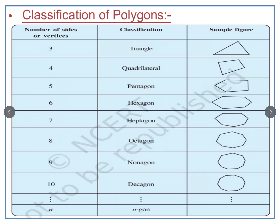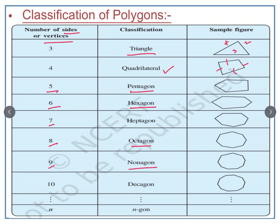We have the classification of polygons based on the number of sides or vertices. A polygon with 3 sides is called a triangle; with 4 sides, a quadrilateral; with 5 sides, a pentagon; with 6 sides, a hexagon; with 7 sides, a heptagon; with 8 sides, an octagon; with 9 sides, a nonagon; with 10 sides, a decagon. A polygon with N sides is called an N-gon.